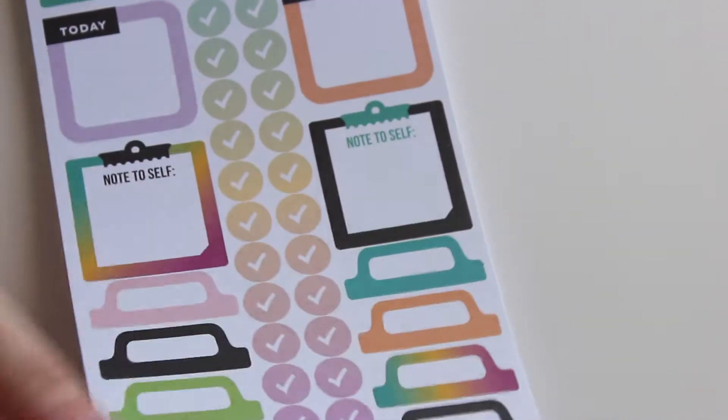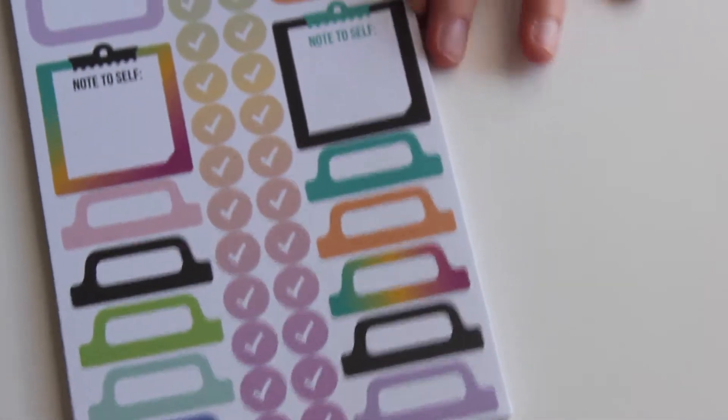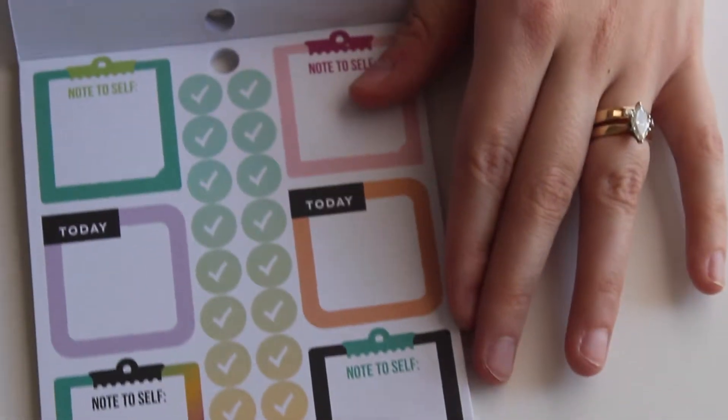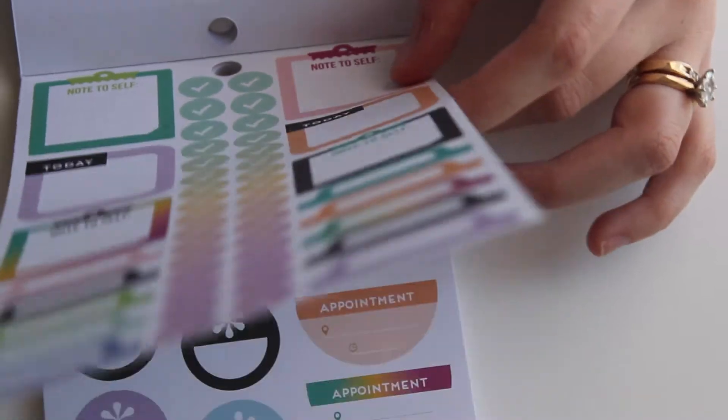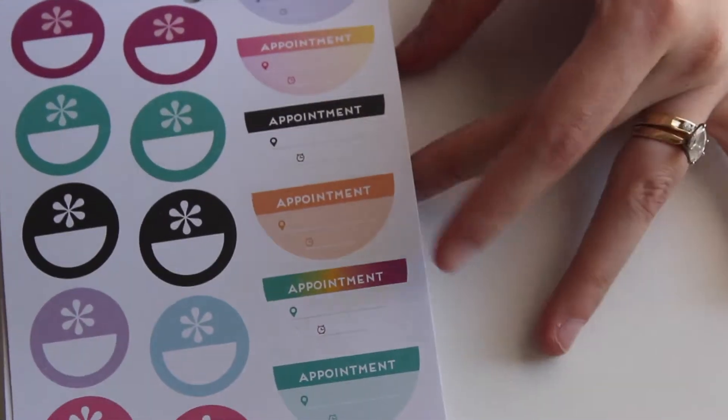And more just little today stickers, note to self, the tabs, checks. And they are kind of ombre, they go from like purple to green and turquoise mint green.